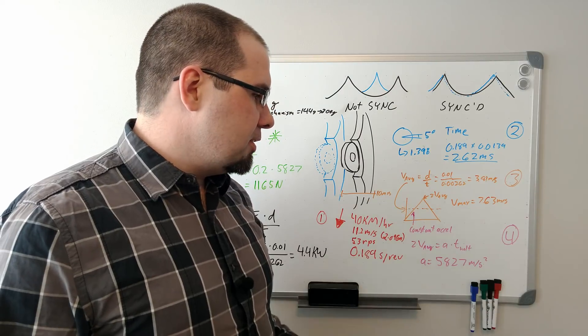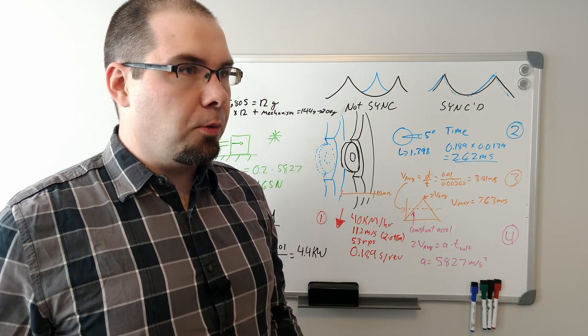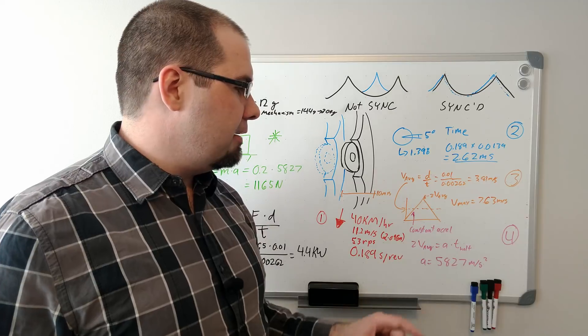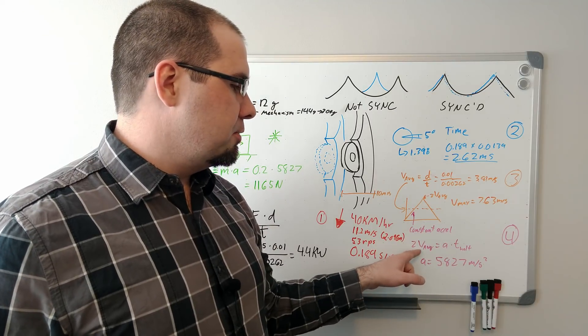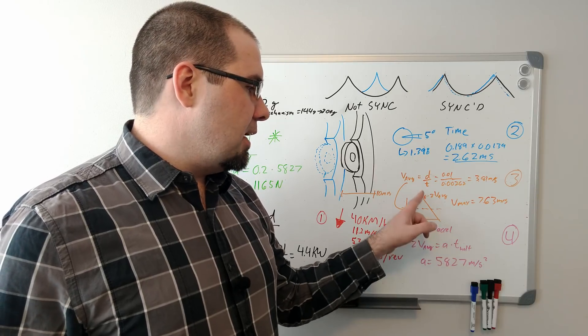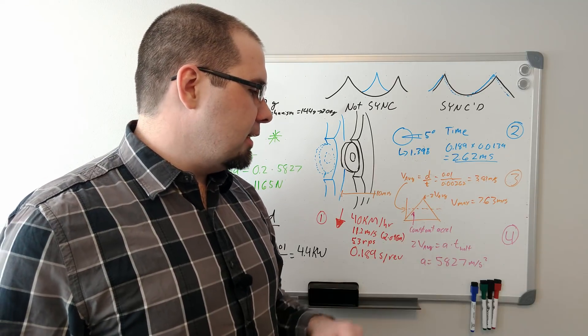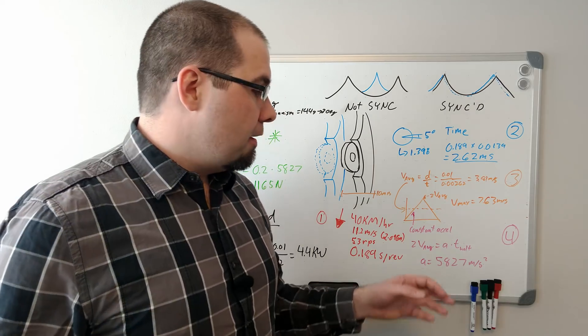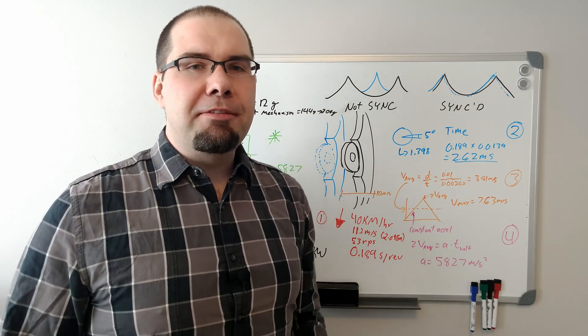So with this constant acceleration, we can figure out what that is. Just take half the graph: constant acceleration, two times the velocity average equals acceleration times the time. And the time is halved. So we actually get a fairly ridiculous number now: 5,827 meters per second squared.